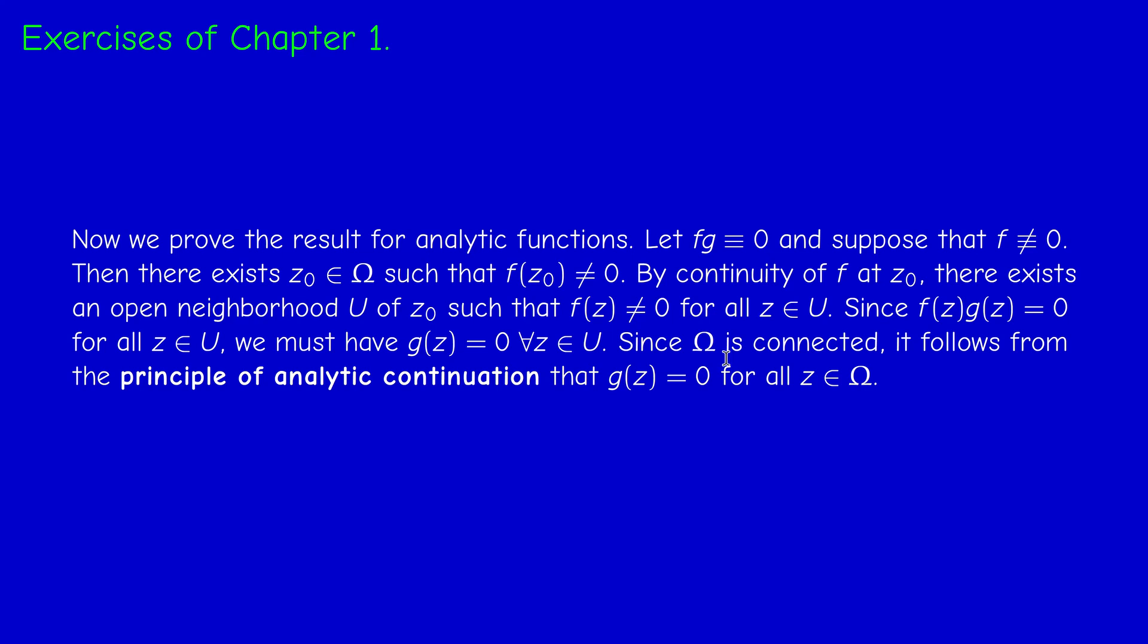And note that we didn't need the analyticity of F here. So actually, we proved something more general. If we have two functions whose product is identically zero and one of them is analytic and the other is just continuous, then one of them is identically zero. So we don't need the analyticity of both, just need the analyticity of one of them and the continuity of the other one.